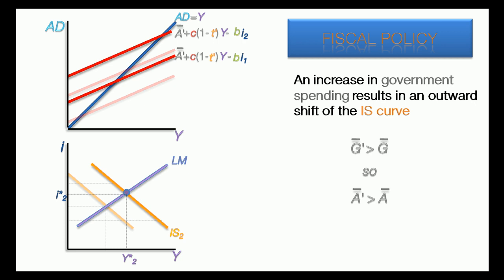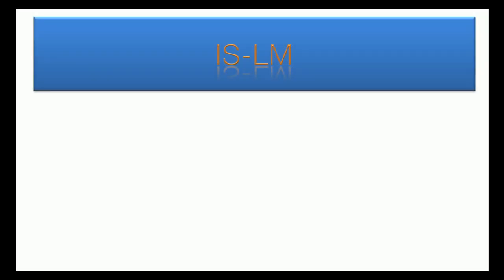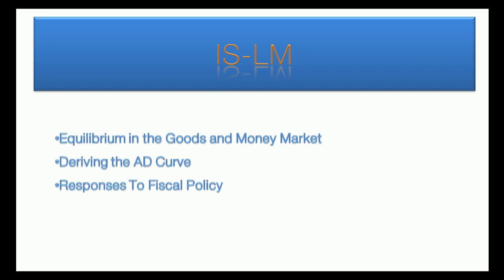So by increasing government spending, the equilibrium level of national income has risen and interest rate has also risen. That completes the video. Now you know how to find equilibrium in the goods and money markets, how to derive the aggregate demand curve based on that equilibrium, how the economy responds in the short run to a change in fiscal policy such as increasing the money supply, or a change in monetary policy such as increasing government spending. Thank you.